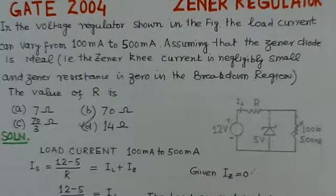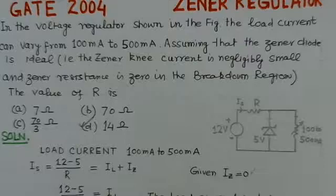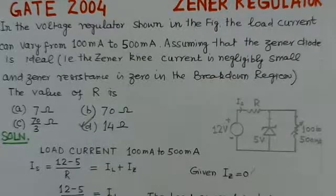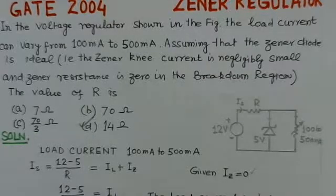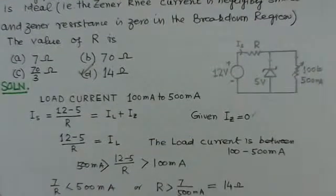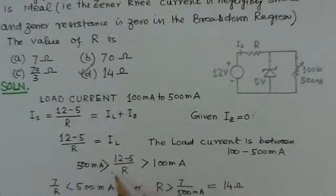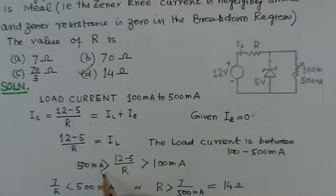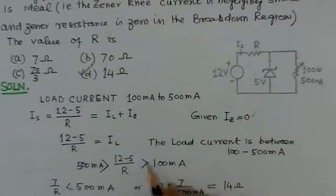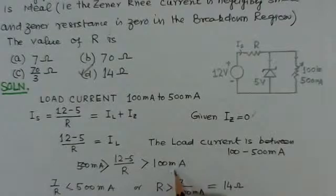The load current is varying between 100mA to 500mA, so we have to find the range of R depending upon the load resistance. This is (12-5)/R, which should be either less than 500mA or greater than 100mA. So (12-5)/R is either less than 500mA or it could be greater than 100mA. These are the range of values of the load currents.